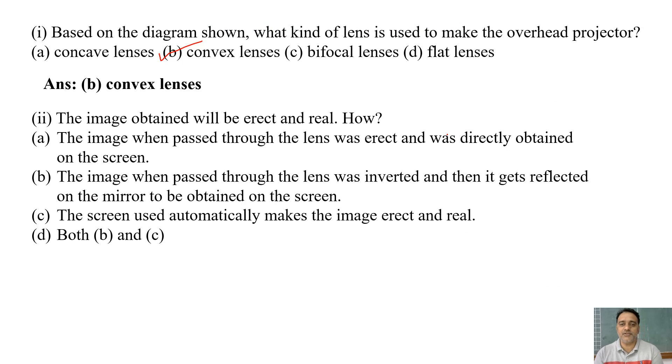And the next question. The image obtained will be erect and real. How? The image when passed through the lens was inverted and then it gets reflected on the mirror to be obtained on the screen. So the correct option is B.